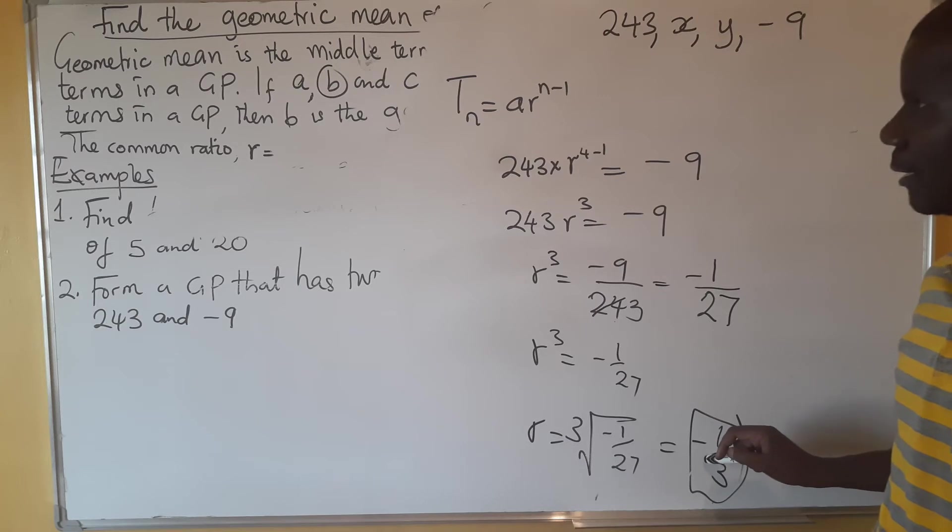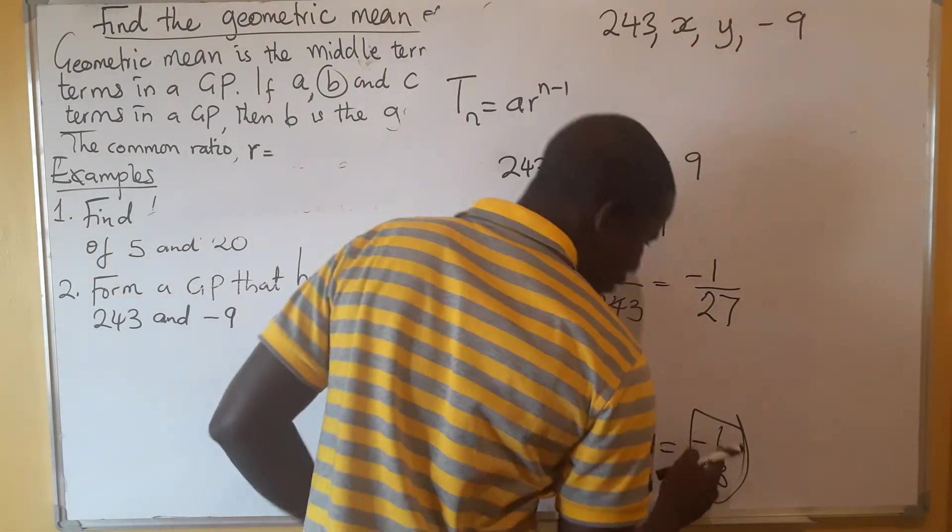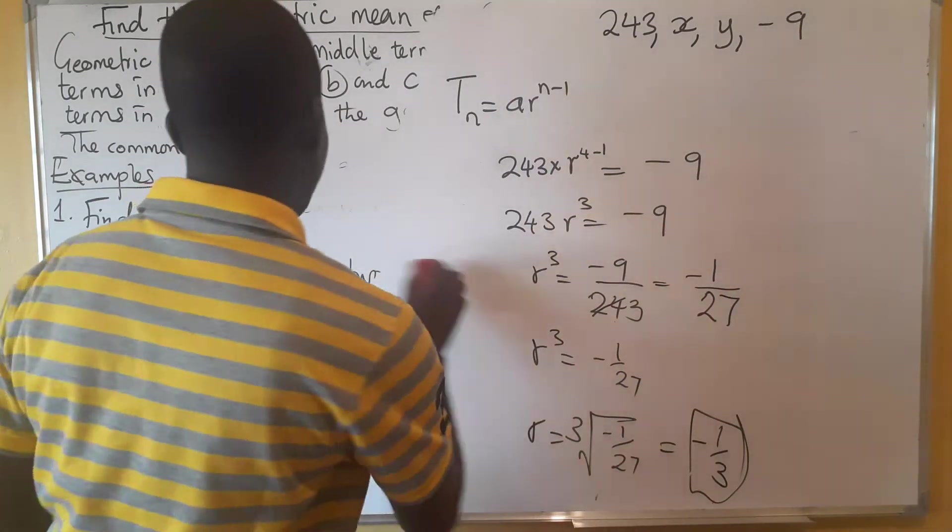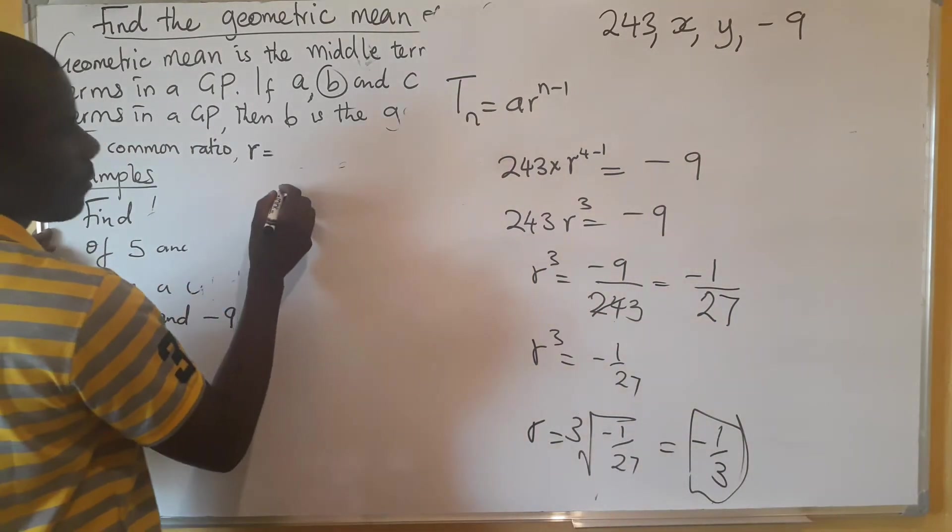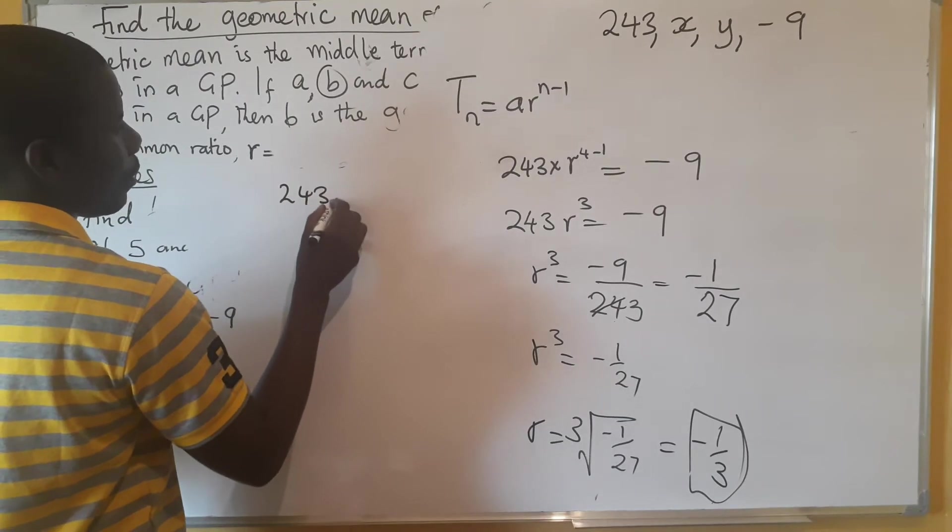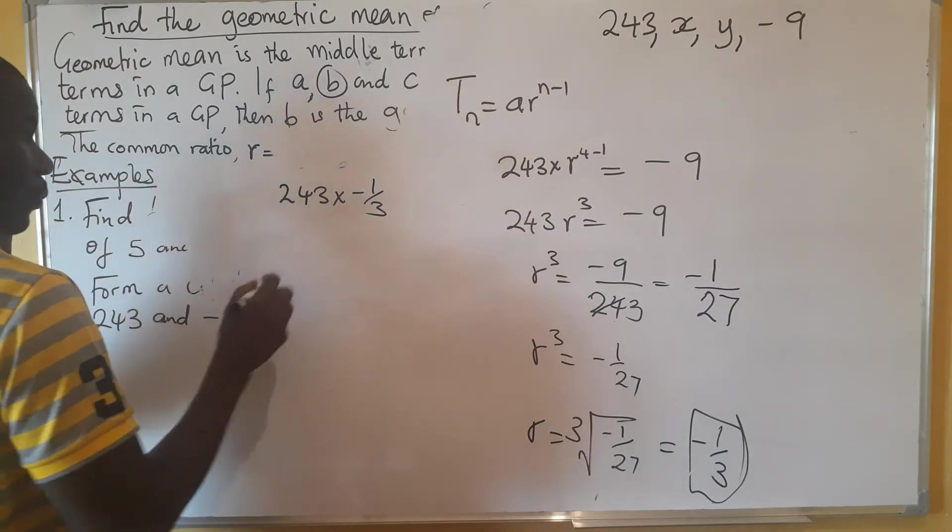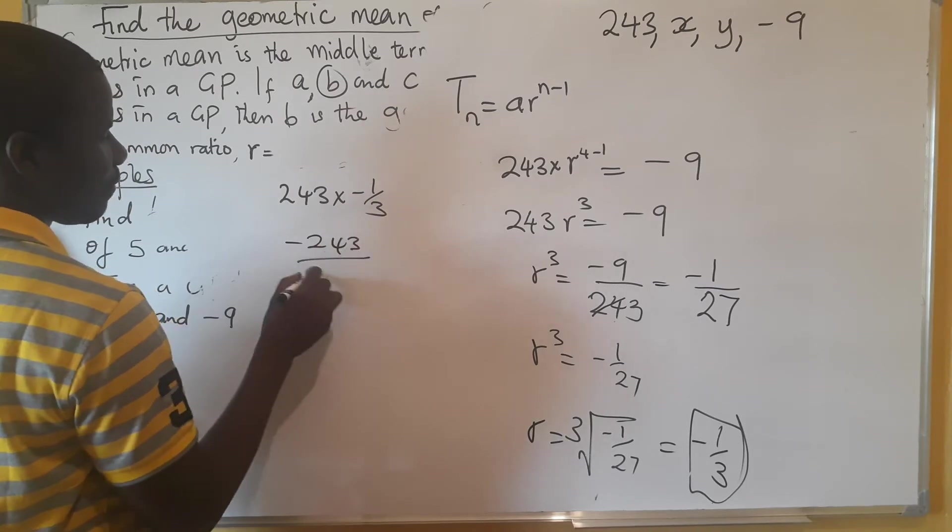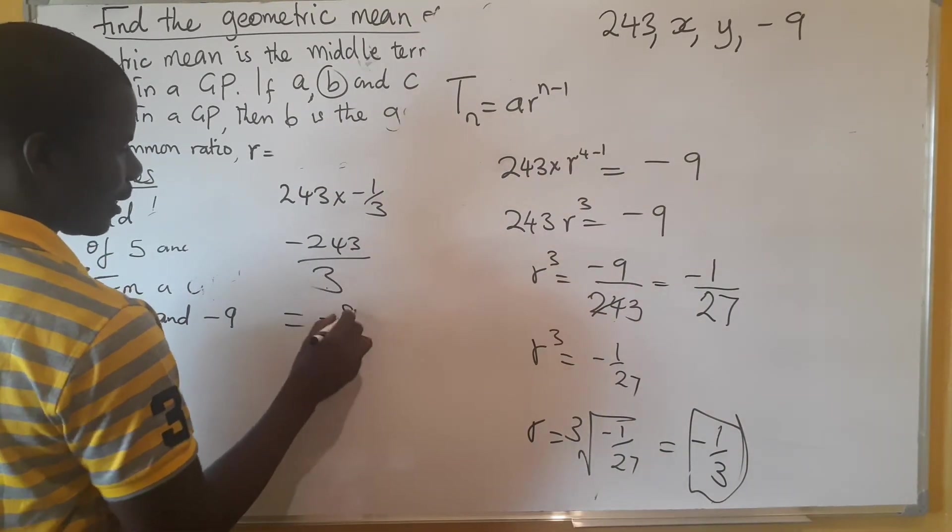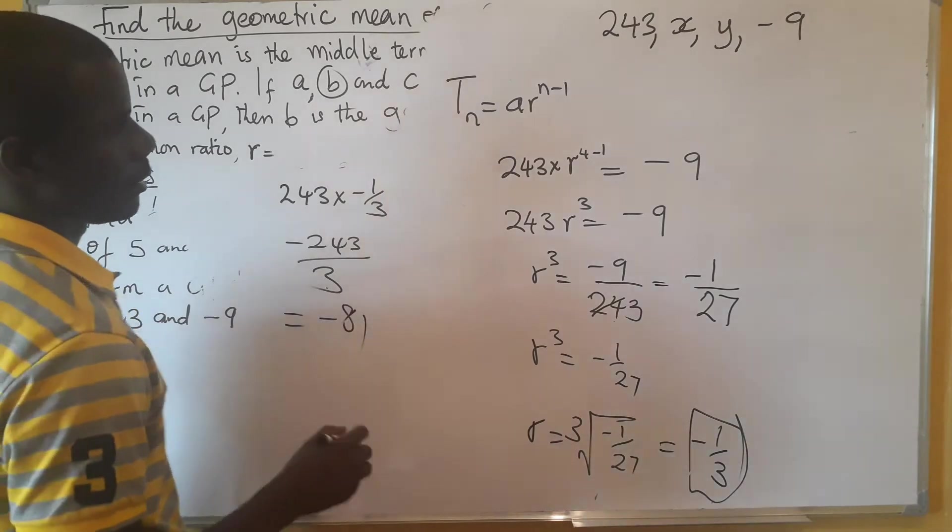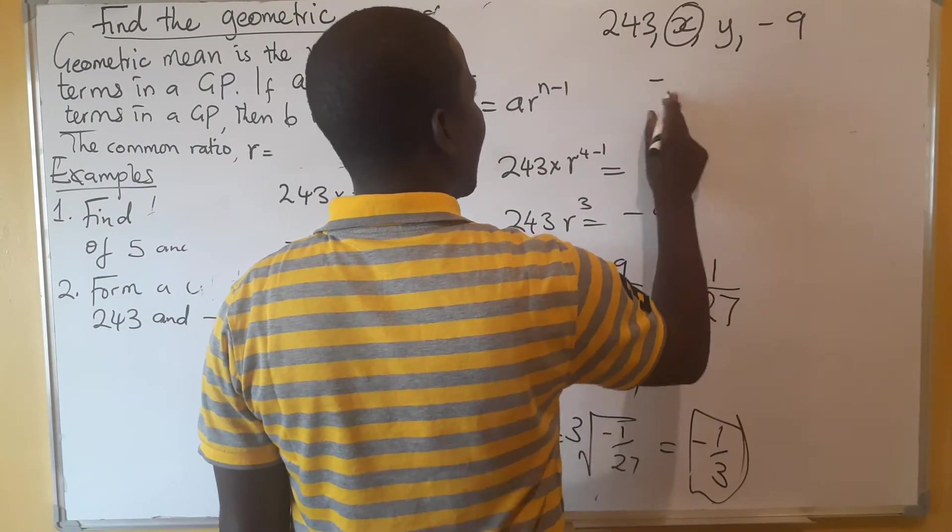After we have found this one, now we are supposed to multiply this one by this one to get this. We need to multiply 243 by negative 1 over 3. What do we get? We have negative 1, we have 81 there. So this, which is one of them, x, is going to be negative 81.